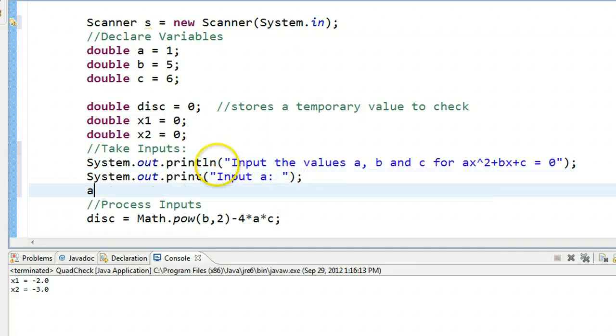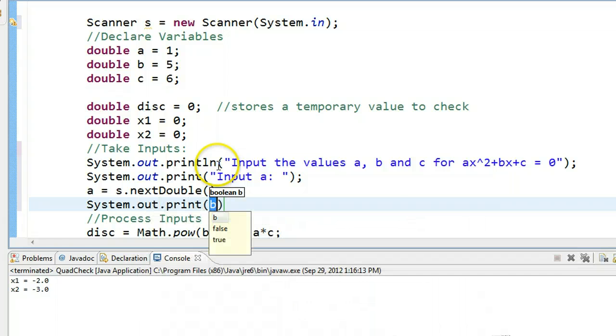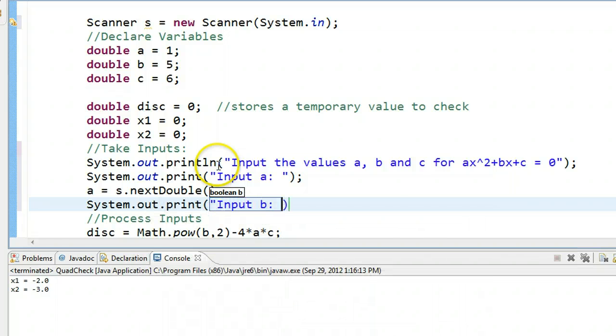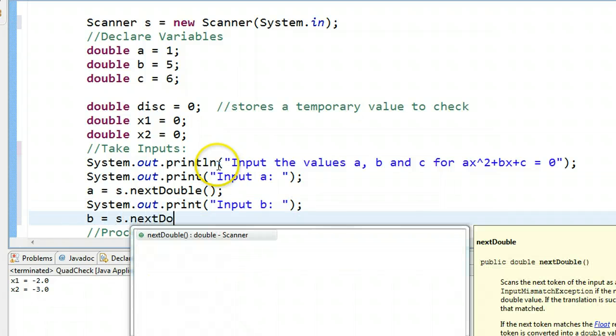So system.out.println input a, a is equal to s.next double, system.out.println input b,